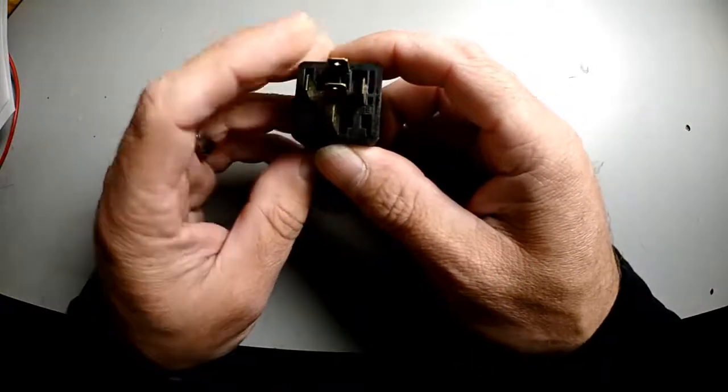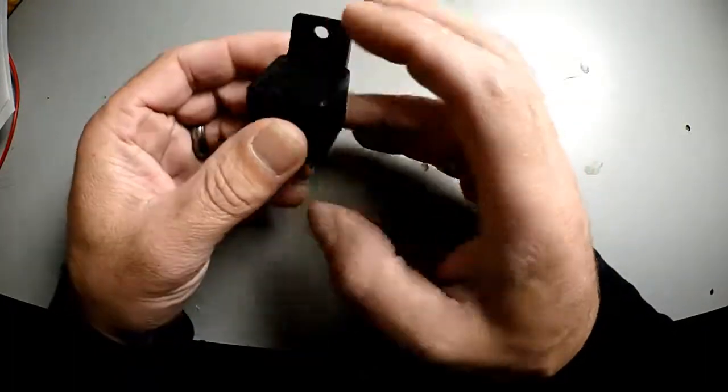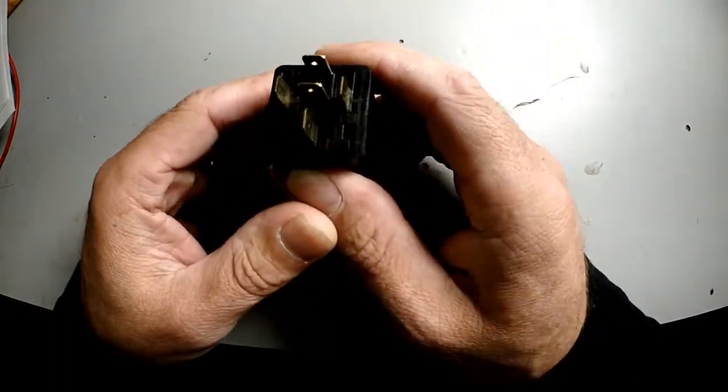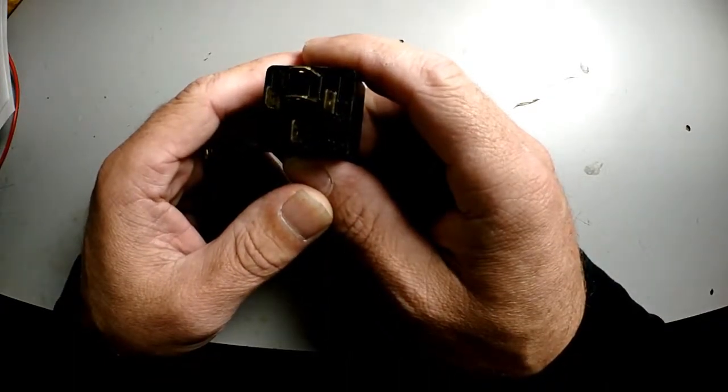Right now we're looking at the prong side of a standard 12 volt 30 amp Bosch style relay. This particular one has five prongs, some have four prongs. Let me show you what those prongs do.